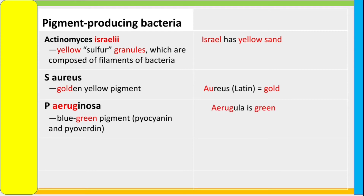How do you remember blue-green pigment in Pseudomonas aeruginosa? The most important color is green. Arugula is green — it's actually a plant, also known as rocket. If you google arugula, you will see the plant I am talking about.